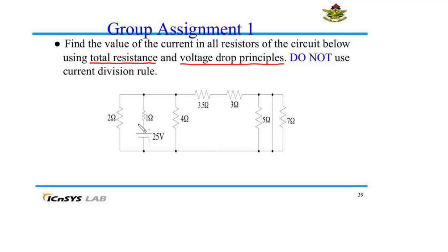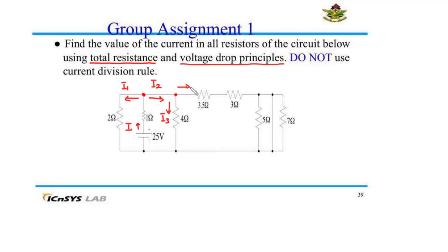We have current I produced by the 25 volts. This current is going to flow through the 1 ohm resistor. On reaching this junction, the current is going to split. Let's assume current I1 flows through the 2 ohm resistor, and current I2 flows through the opposite direction. On reaching the next junction, I2 splits further: I3 flows through the 4 ohm resistor, and I4 flows through the 3.5 ohm and 3 ohm resistors, which are connected in series — so the same current flows through both.